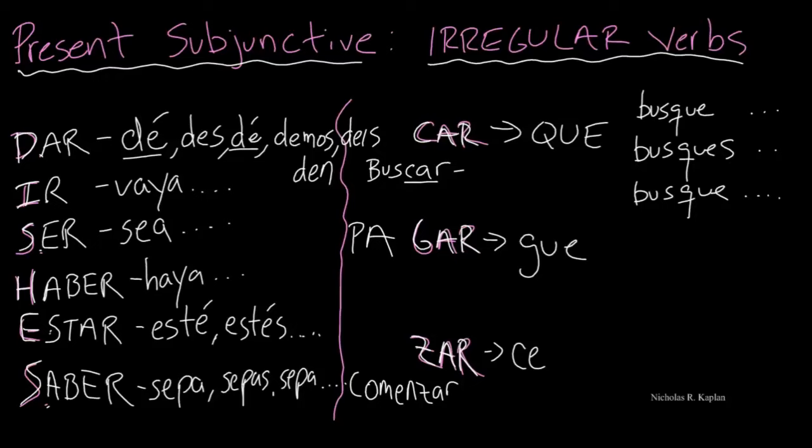Okay, when you're working with the present subjunctive, remember that we do have irregular verbs. But it's not too bad, because all we need to remember are our dishes. Gotta get the dishes done. And our CAR, GAR, and ZAR verbs.